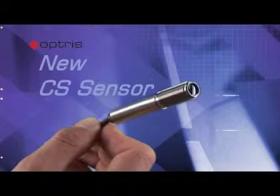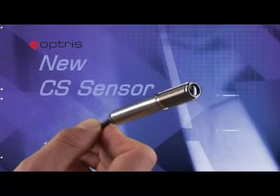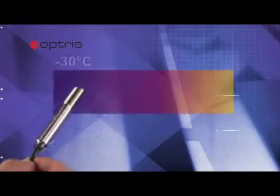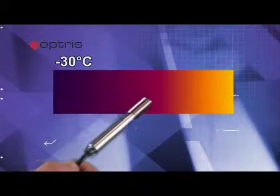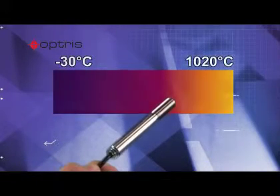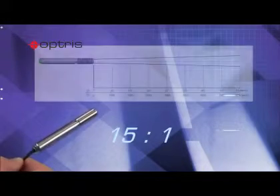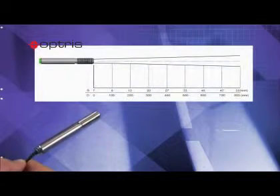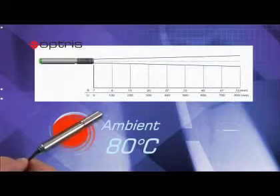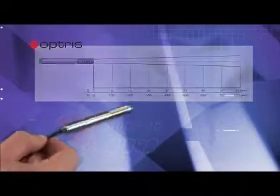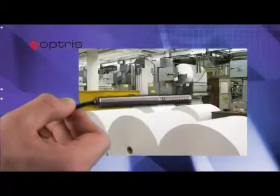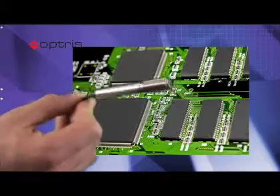The new Optris CS Infrared Thermometer has a wide temperature range from minus 30 up to 1020 degrees Celsius. With a response time of 25 milliseconds, an optical resolution of 15 to 1 and a maximum ambient temperature of 80 degrees Celsius, it is the best choice for fast temperature monitoring in industrial processes.